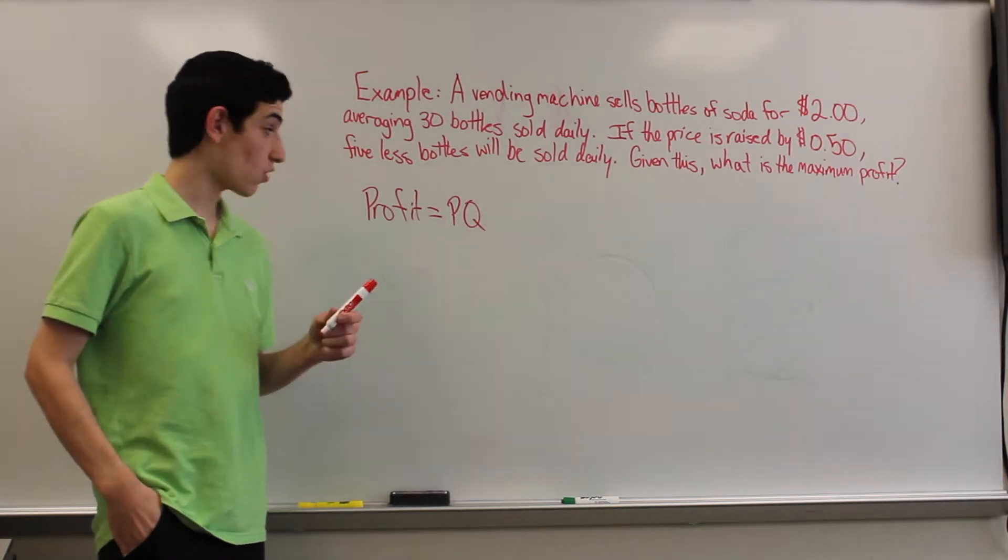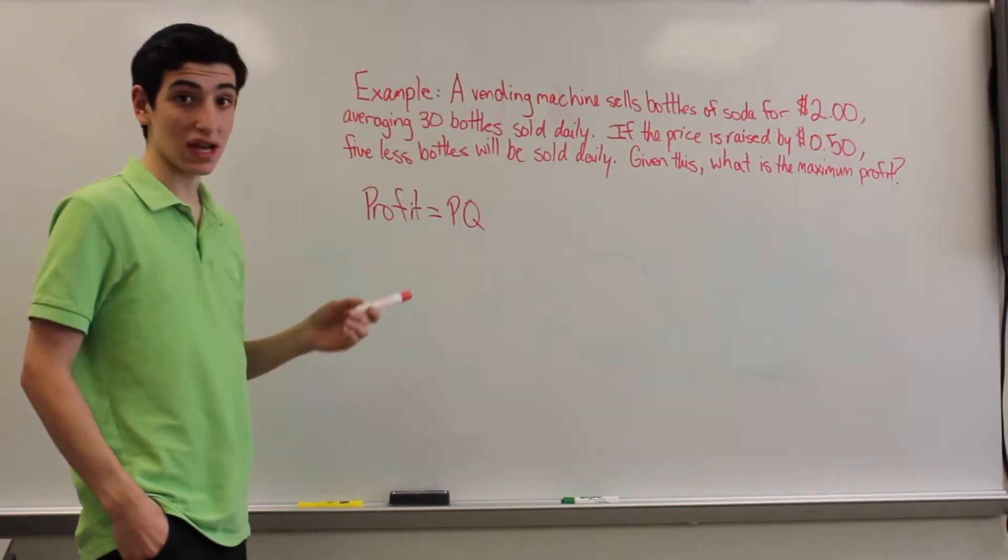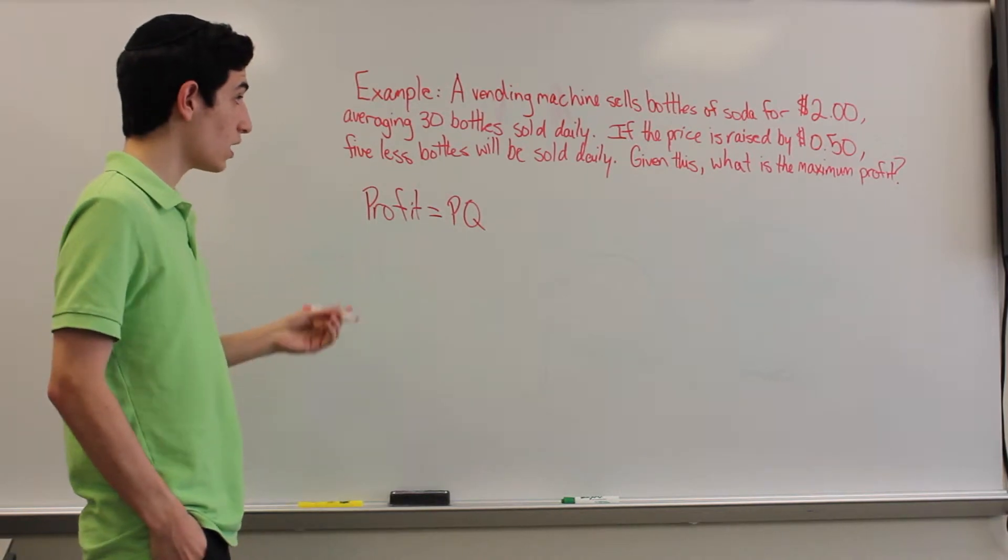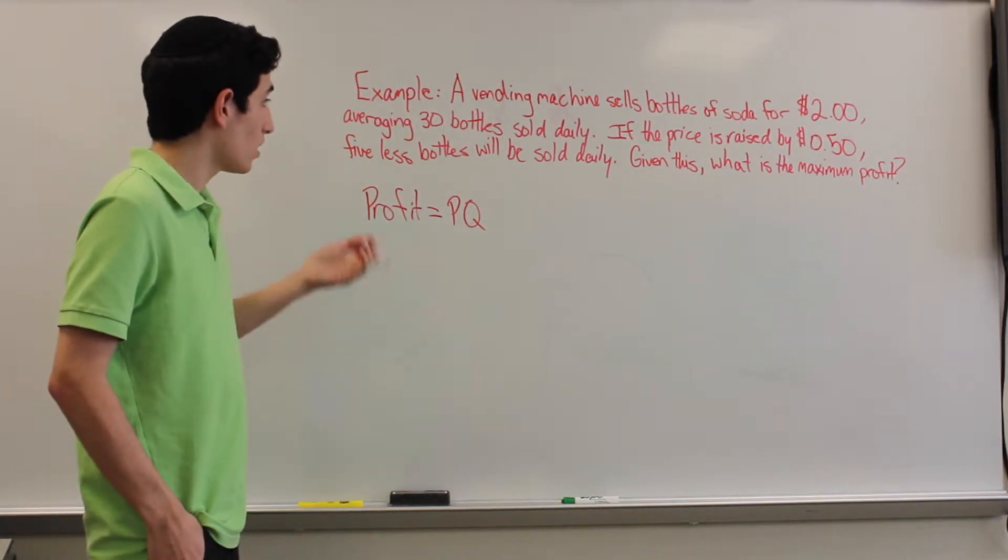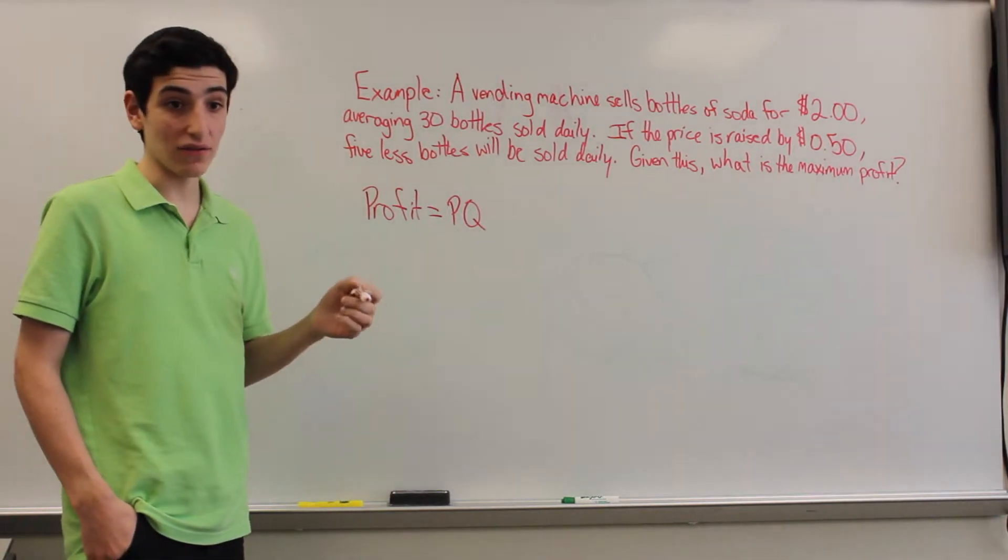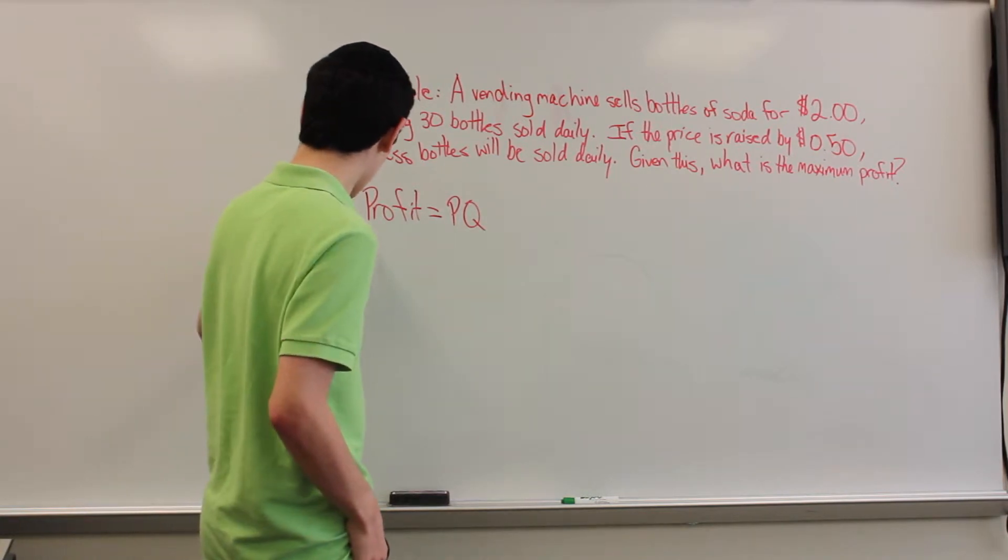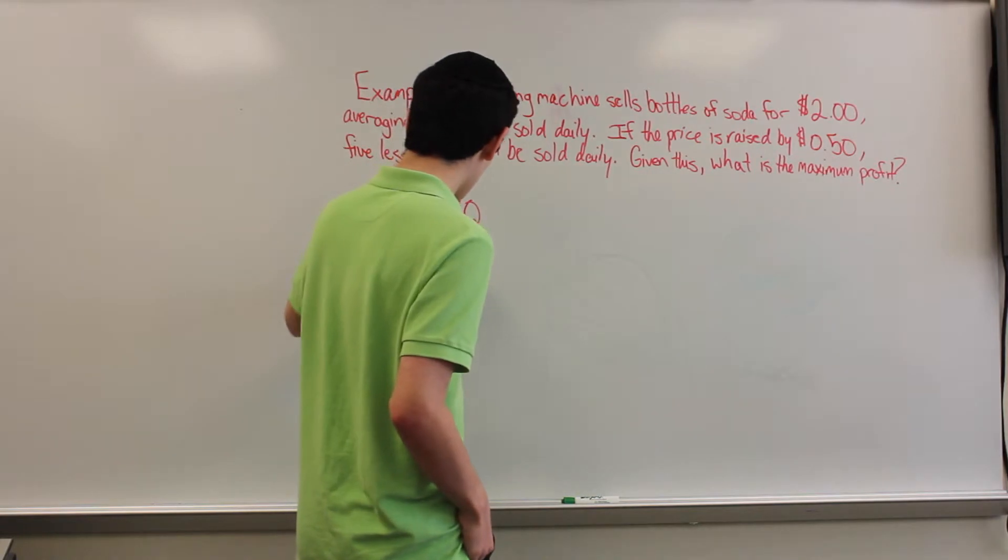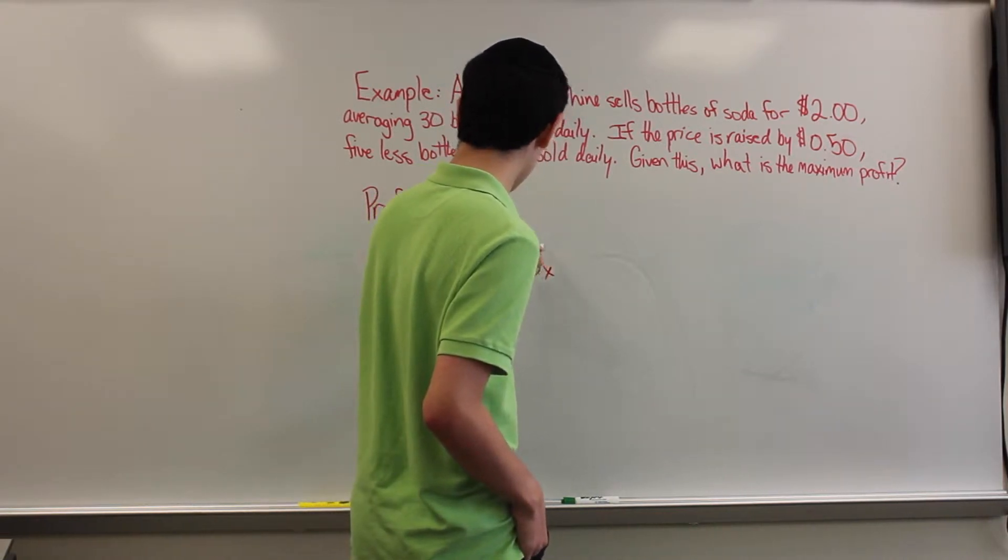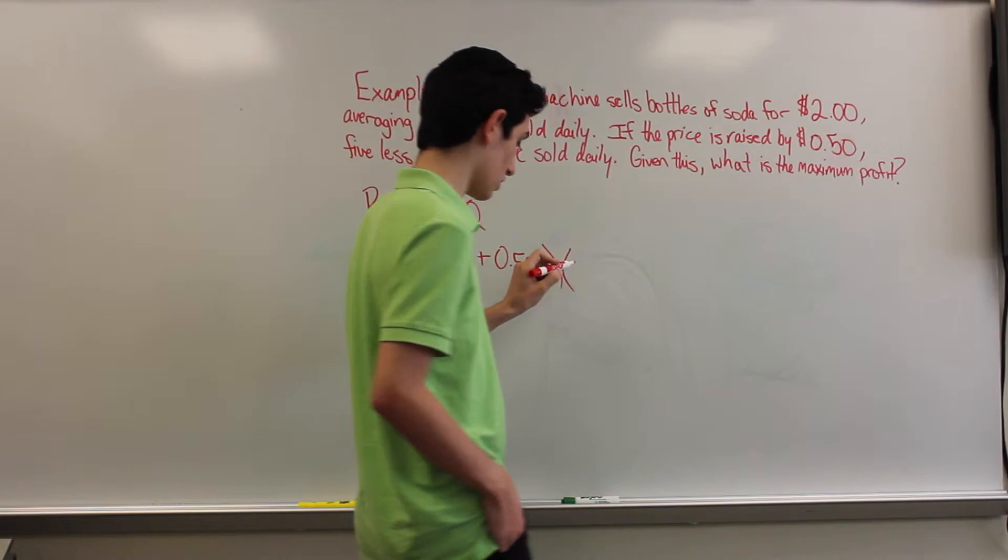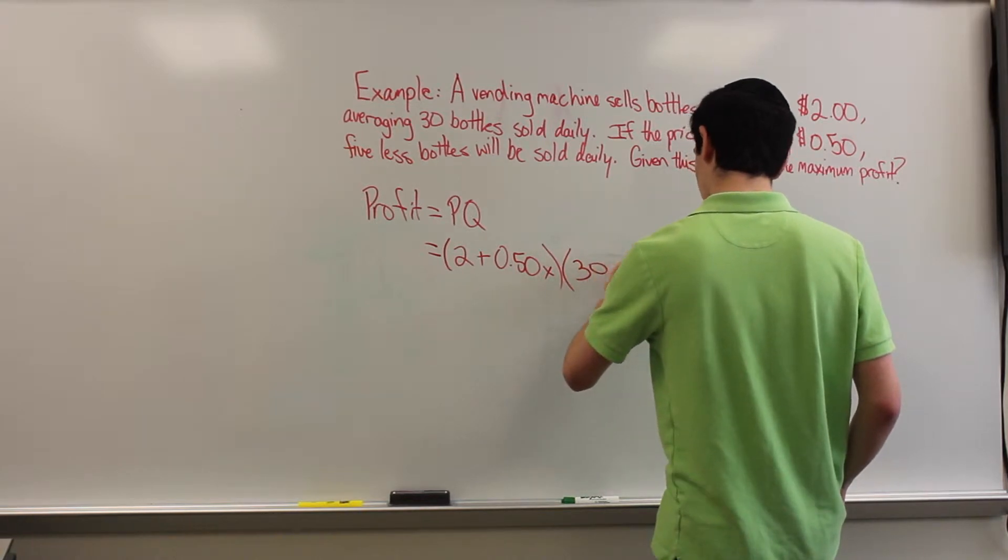So our equation for maximizing profit is profit equals price times quantity. Now we already know that we have $2 as our original value for the bottles of soda. And we're going to be raising that by 50 cents times the amount of bottles that will be added. And also the quantity is going to be lowered by 5 for each same x. So if we plug that into our equation, we have profit equals $2 plus 50 cents times x times 30 minus 5 times x.